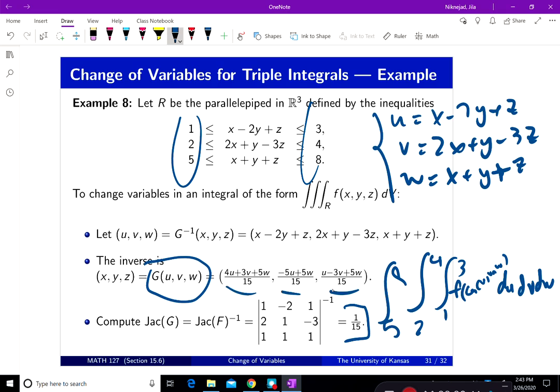And then you can set up the integral. Oh, I've forgotten to put the Jacobian in there, which is 1 over 15. And then you can reset that, then change variables, and then triple integral.